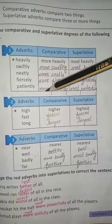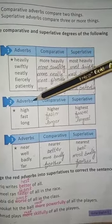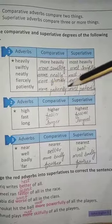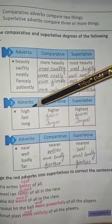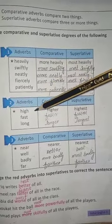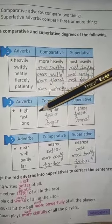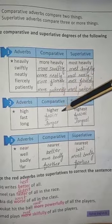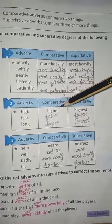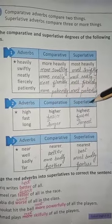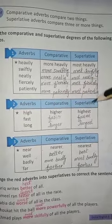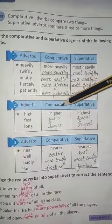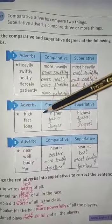The next set of adverbs follows a different pattern for comparative and superlative. For example: high, higher, highest. And fast, faster, fastest.